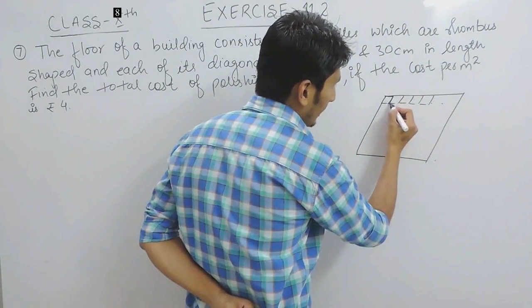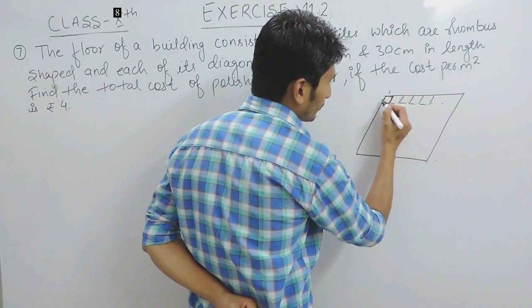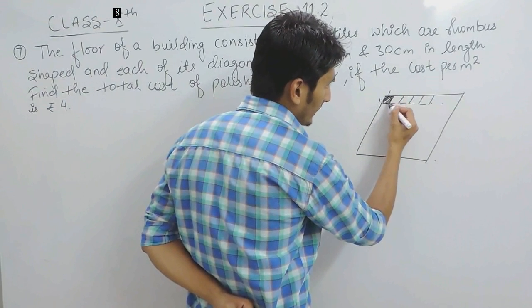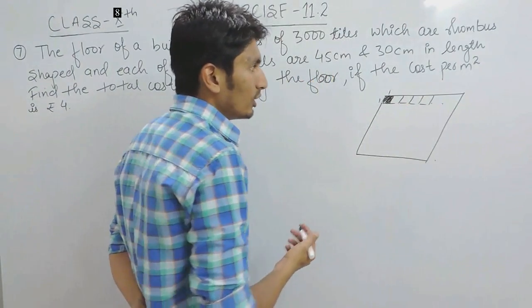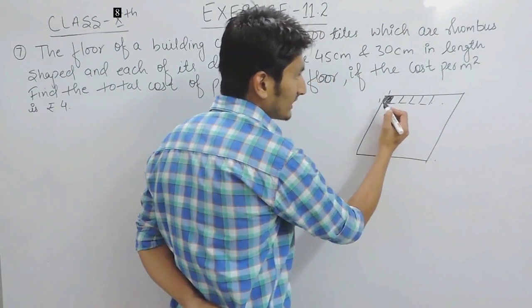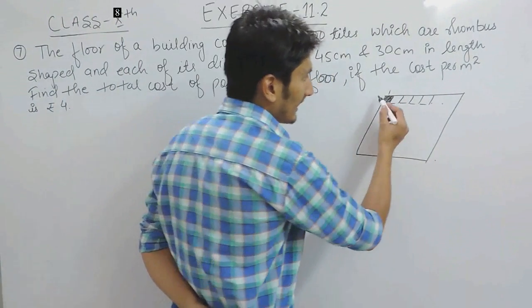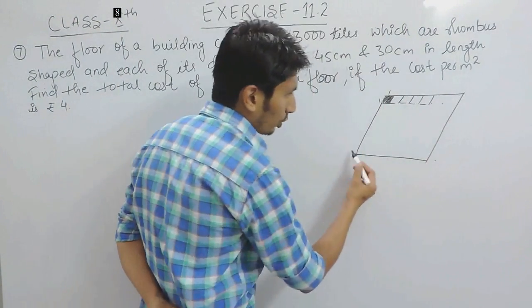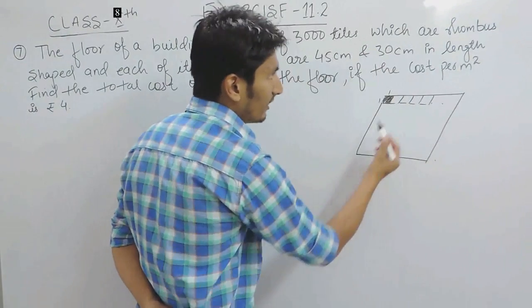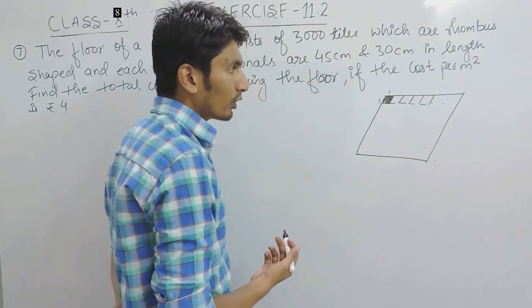Let's suppose this is a tile with 1 meter length and 1 meter breadth. So this area is known as 1 meter square. If I have to pay Rs. 4 for this area, so clearly to polish this whole area, I have to multiply this whole area with Rs. 4.